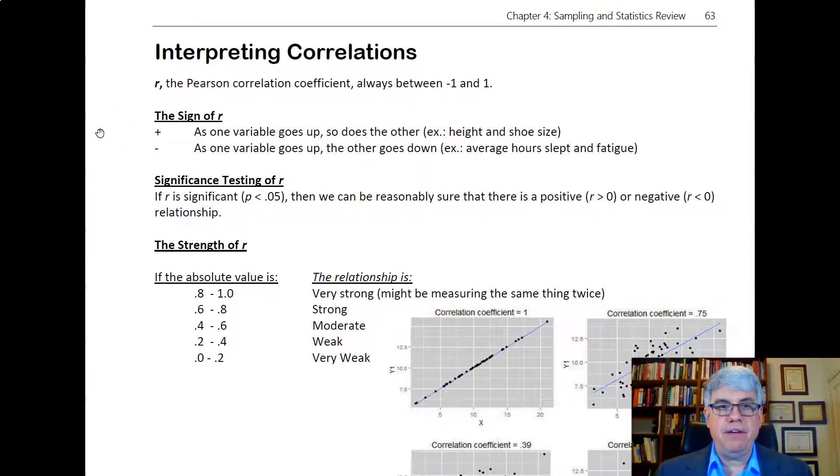With the sign of r, if it's positive, that means as one goes up the other does also. If you measure how far people run and then how thirsty they are, they're positively correlated. You get more thirsty the farther you run.